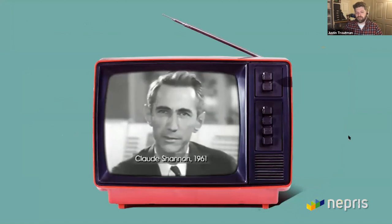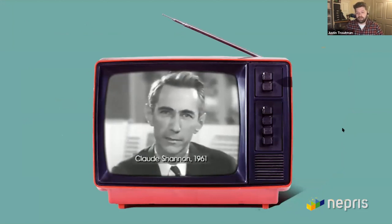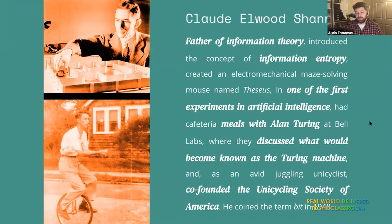You might or might not know who Claude Shannon is yet, but even if you get into computer science — not even information security or cryptography — you'll learn very quickly about Claude Shannon. He's known as the father of information theory, one of the first to experiment with artificial intelligence, which is becoming a really big deal today. He regularly had lunch with Alan Turing at Bell Labs. Alan Turing is somebody you'll either already be familiar with or will learn about in general computer science — he was at the forefront of breaking the Enigma device and building the computing devices responsible for decrypting those messages for the British.